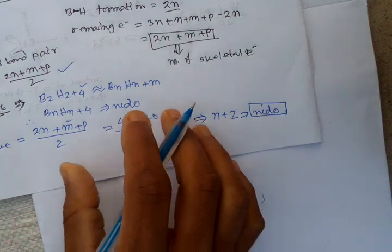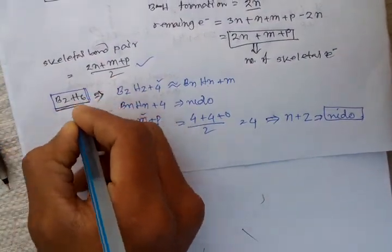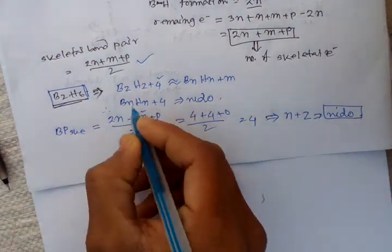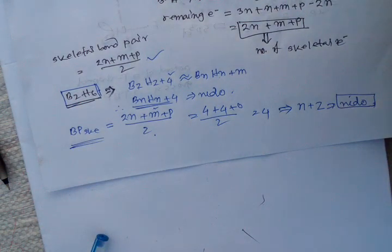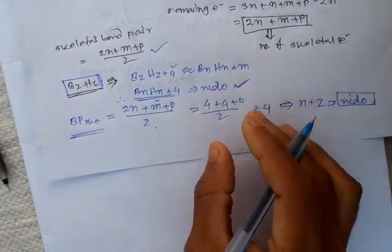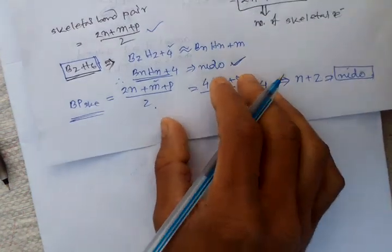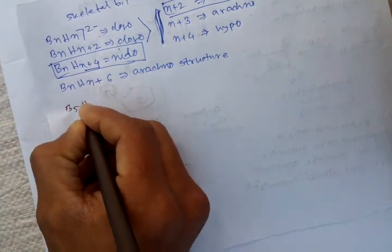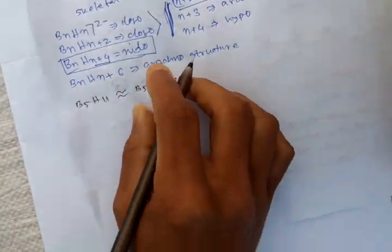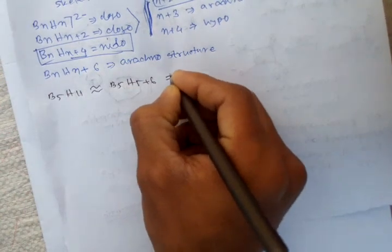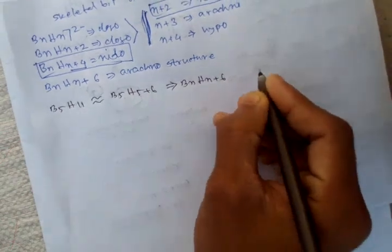So if you find out the structure of any compound using this method, it is very simple. Another example: B5H11. It looks like B5H5 + 6H, so it matches BₙHₙ₊₆, which means it is an arachno structure.